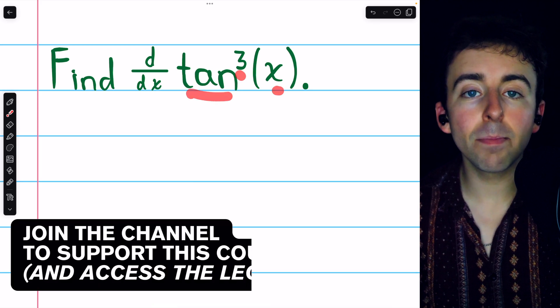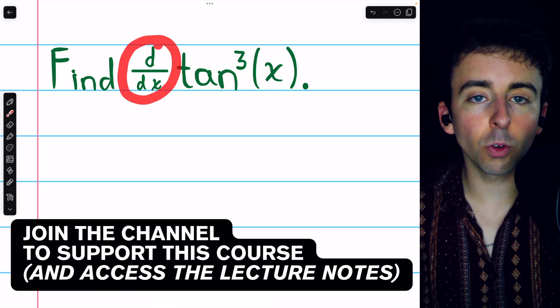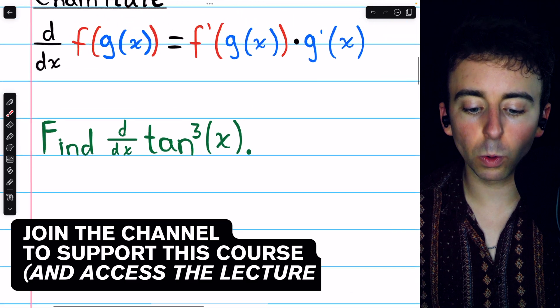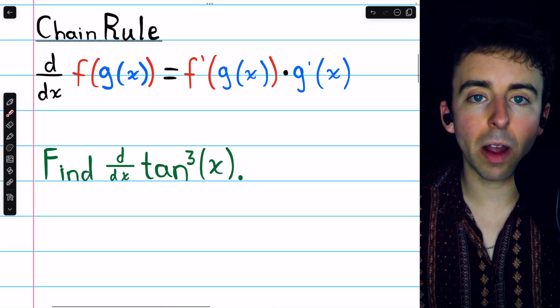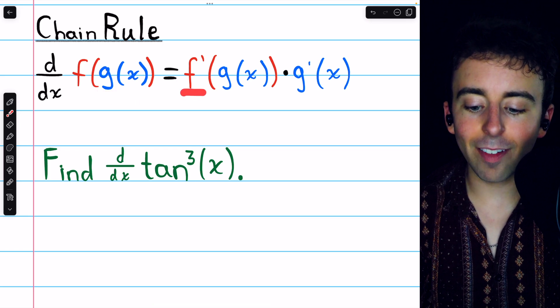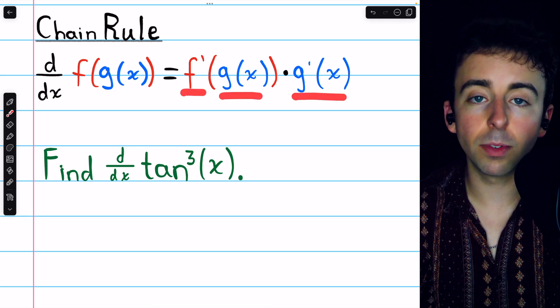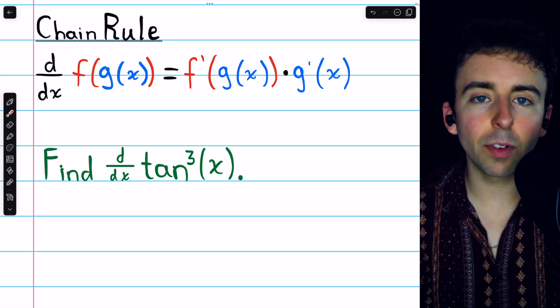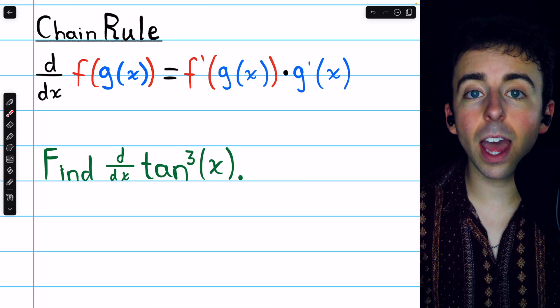Tangent cubed of x is a composite function, so to take its derivative we need to use the chain rule, which I've written here for your reference. The derivative of f of g is f prime of g times g prime. So let's identify our f and our g and then apply the rule.